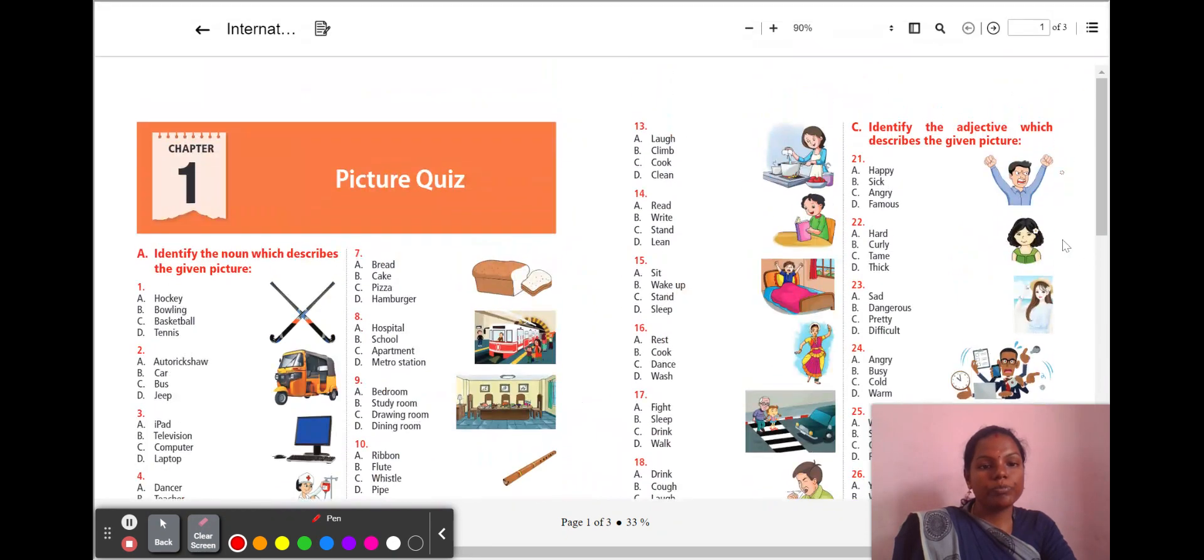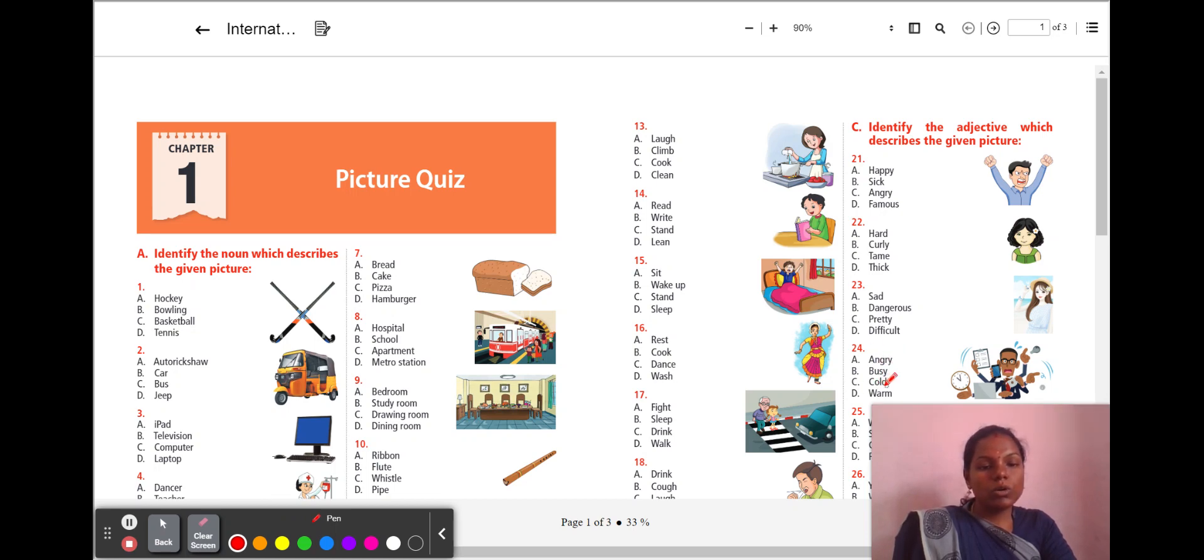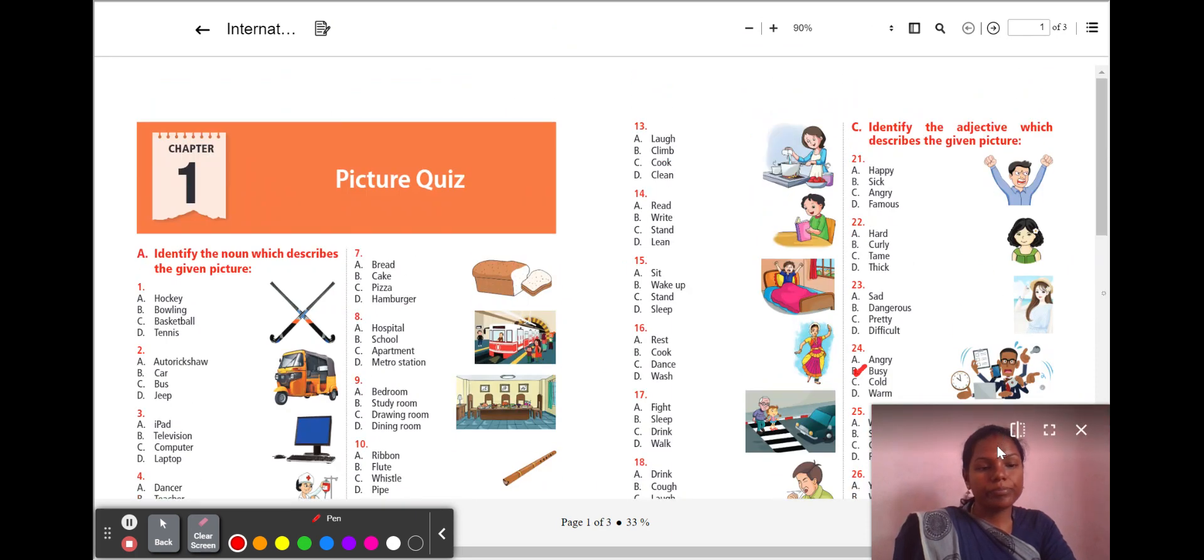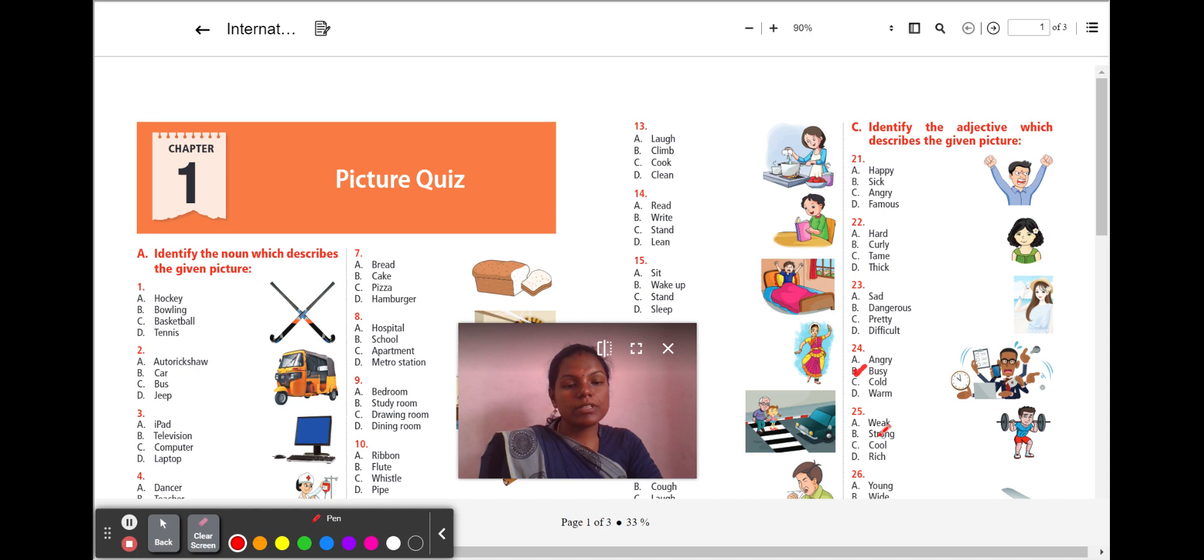Next, 24th question. Look at this man. How is he? He has more number of tasks to complete. So, what is the right adjective word for him? A, angry. B, busy. C, cold. D, warm. He is busy with all these tasks. So, the answer is B, busy. Next, 25th question. Look at this man. How does he look? Is he a weak man or strong man? Cool, rich. He is doing exercise and he is lifting a heavy weight. So, he must be a strong man. The answer is B, strong.